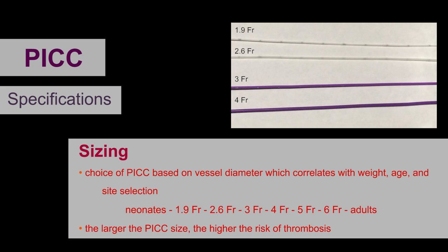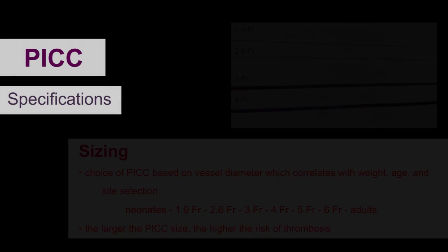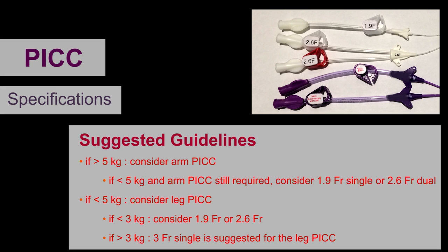The larger the PICC size, the higher the risk of thrombosis. We suggest that in pediatric patients greater than 5 kg, the arm PICC should be considered. If a patient is less than 5 kg and an arm PICC is still required, consider 1.9 French single or 2.6 French dual. Otherwise, consider a leg PICC.